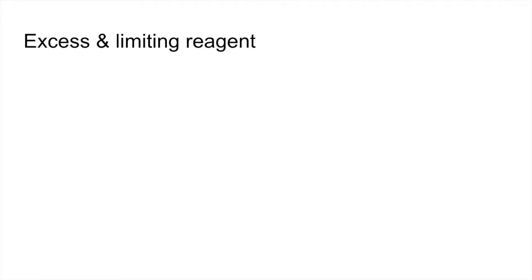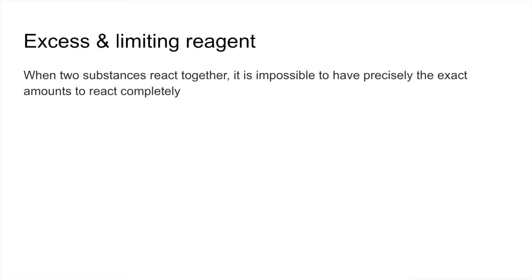So we'll just explain what the two terms mean. When you've got two substances that react together, it's impossible to have precisely the exact amounts to react completely. One reagent will be in excess and one reagent will be limiting.